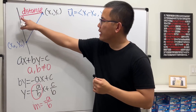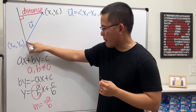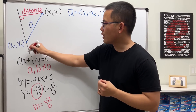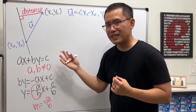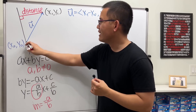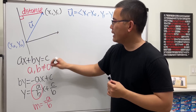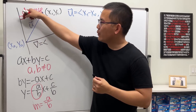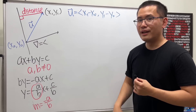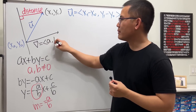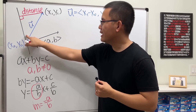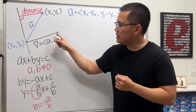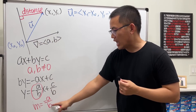Assuming a and b are positive, to trace along the line we go down a times and move right b times. To get a perpendicular direction, we reverse this: go up b times and right a times. So we create vector v with component form (a, b), which is normal to the line. The slope of v is b/a, and the slope of the line is −a/b — these are negative reciprocals, confirming perpendicularity.